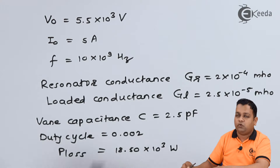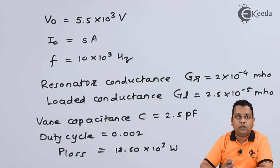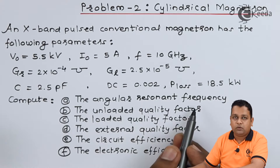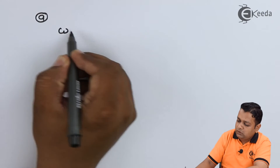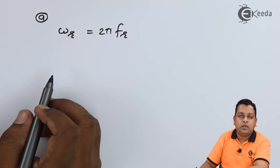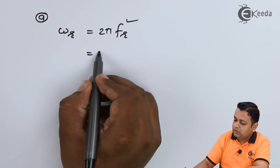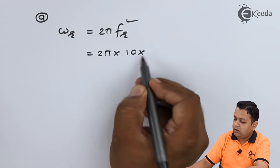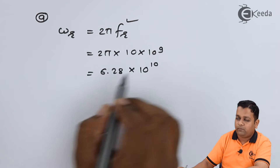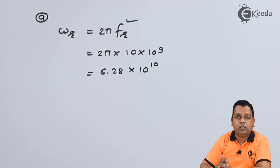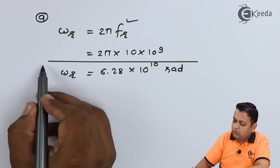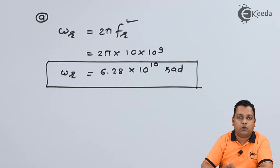For Part A, the angular resonant frequency is denoted as ωR, and the formula is ωR = 2π × fR. The frequency fR is provided as 10 GHz, so we substitute: 2π × 10×10⁹, which gives 6.28×10¹⁰ radians per second. The angular resonant frequency is 6.28×10¹⁰ rad/s.